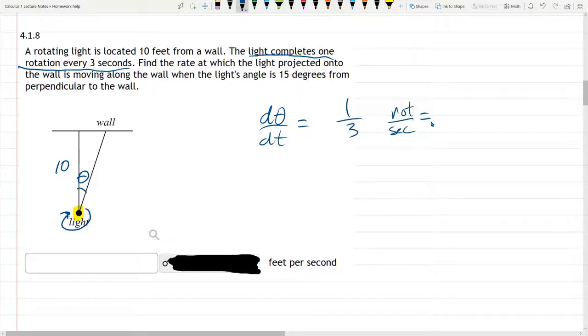We're not measuring in rotations, we're measuring in degrees. So that's 360 degrees per 3 seconds. And now our units are not rotations per second, they're degrees per second.